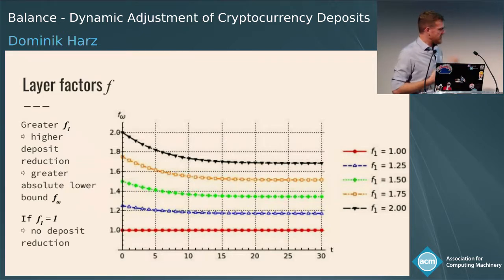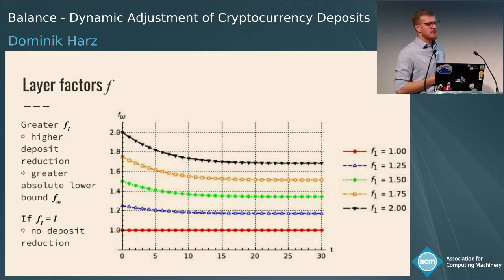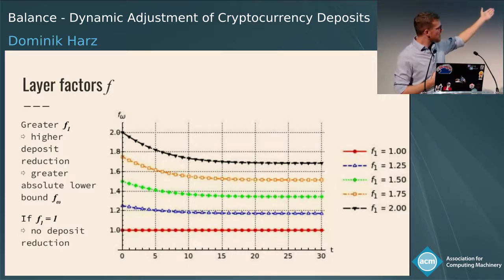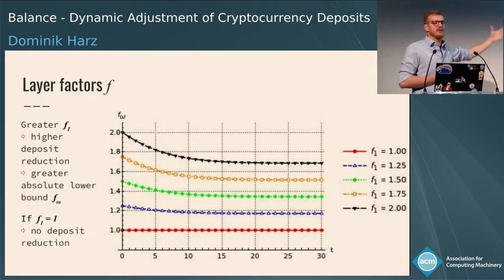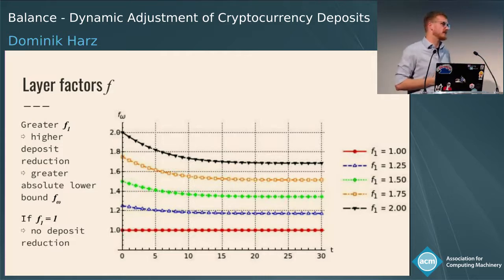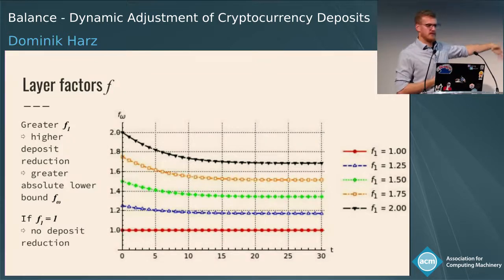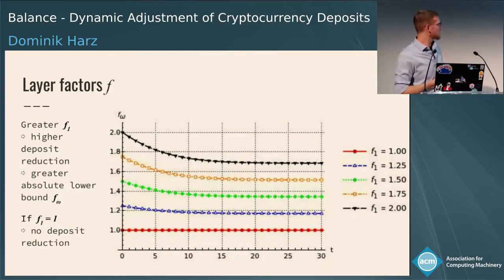Next, regarding layer factors: the black line shows that if we start with 200% collateral, the relative collateral reduction is greater with a higher initial collateral rate, and the absolute collateral achieved after 30 layers will be higher. Interestingly, if there's no over-collateralization — exactly 100% collateral — you cannot reduce the collateral at all. In the practical case of the Lightning Network, which typically uses exactly 100% collateral, this protocol would not be applicable. But for a range of Ethereum-based protocols with over-collateralization, it is quite applicable.